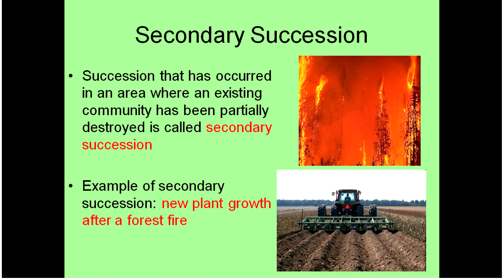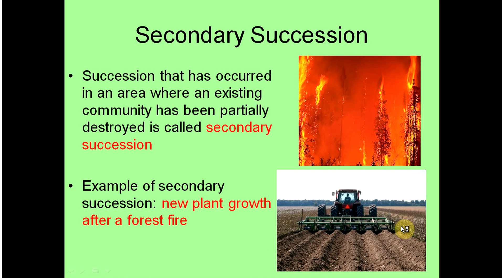Secondary succession is when you have an area that did have living things, but the community — the group of living organisms — has been destroyed in some way. For example, a forest fire has destroyed a community, and secondary succession is going to occur. Also, some farmers, in the process of farming, will completely destroy the soil to the point where succession has to start over.